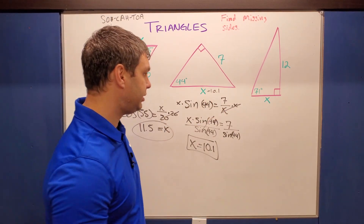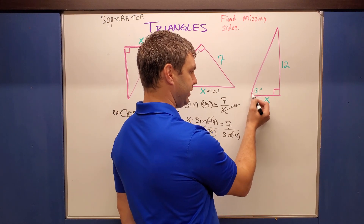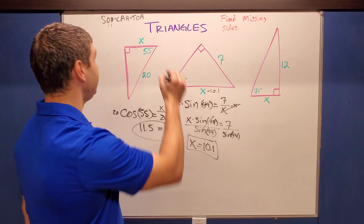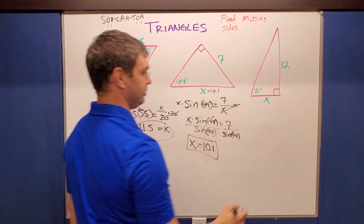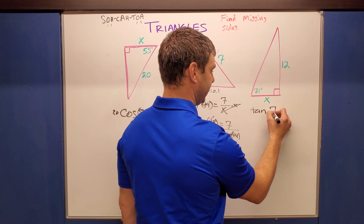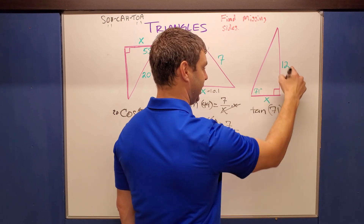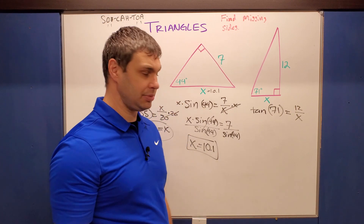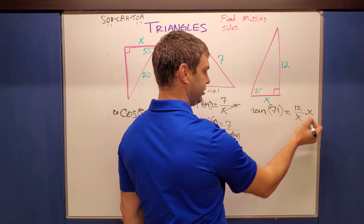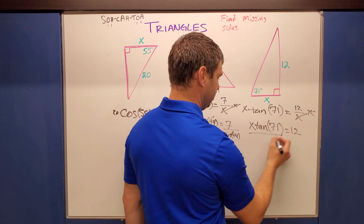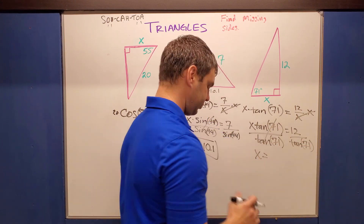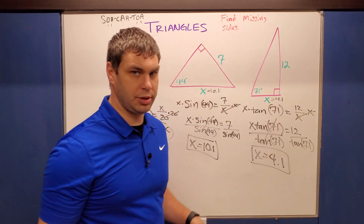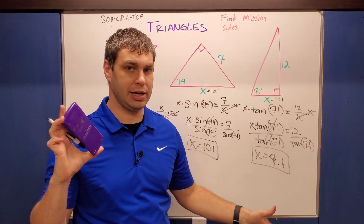In the last missing-side problem, compared to the 71° angle, we have opposite = 12 and adjacent = X — that's tangent. Setting up tangent(71°) = 12/X and solving gives X ≈ 4.1.